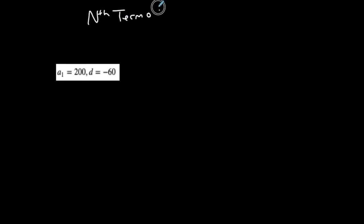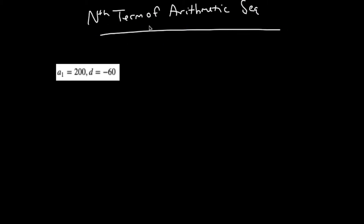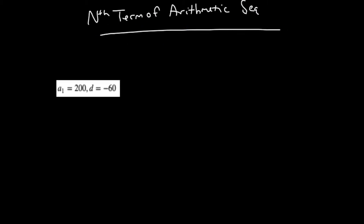In this video, we're going to talk about how to find the nth term of an arithmetic sequence. There is a formula we use for arithmetic to find the nth term: an equals the first term plus n minus 1 times d. This is the formula for the nth term of an arithmetic sequence, and you could use this to find the nth term of any arithmetic sequence.